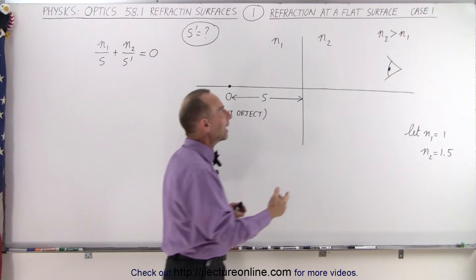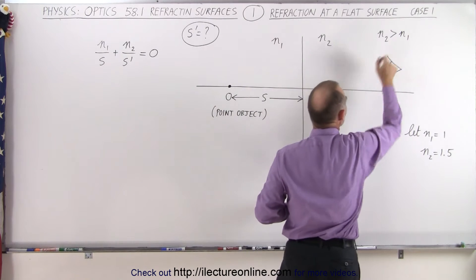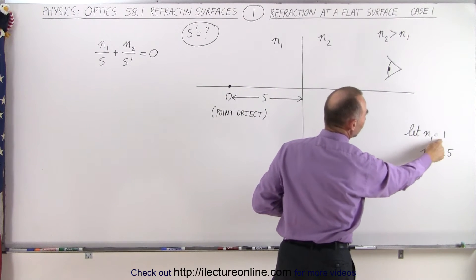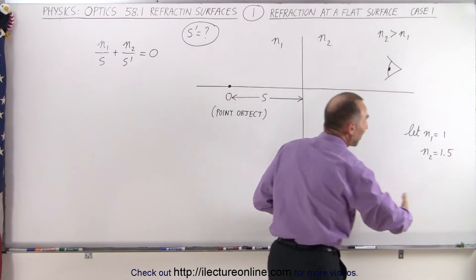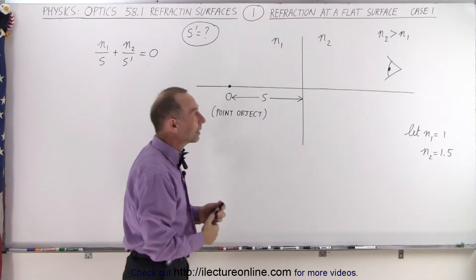Now here we see that n2 is greater than n1. In this particular case let n1 equals 1, which means n1 must be air, and n2 equals 1.5, so that's probably something like glass.